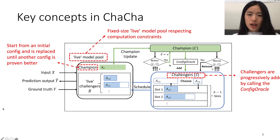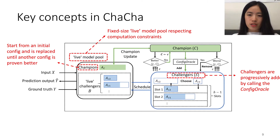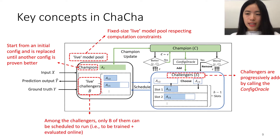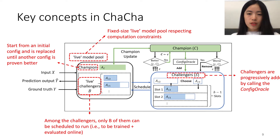The Challengers are progressively added in this framework. Since the size of the live model pool is fixed, we can only afford running a particular amount of Challengers. We call the Challengers that are running the live Challengers. So when I say 'run a configuration,' I mean training and evaluating the model built based on that configuration.